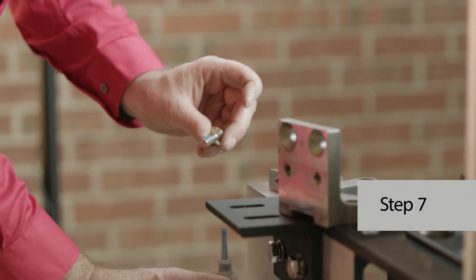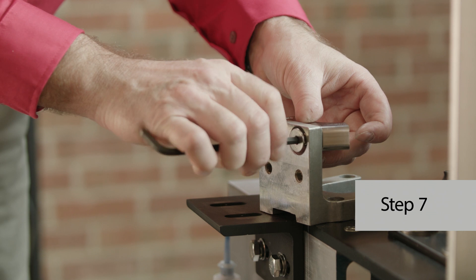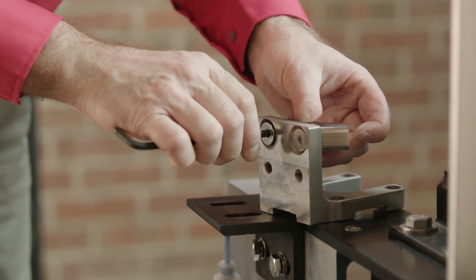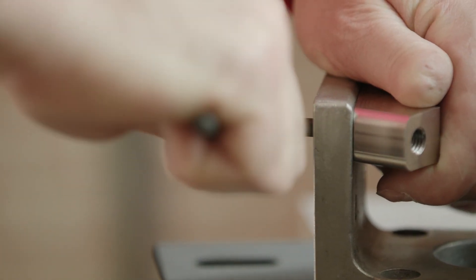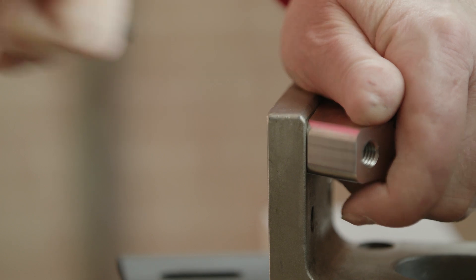Step seven, if not already assembled, fasten one bearing clamp onto the oscillator mount bracket using two M10 by 30 millimeter long flathead screws. Be careful to observe proper orientation of the bearing clamp. Use medium strength threadlocker on these two fasteners.